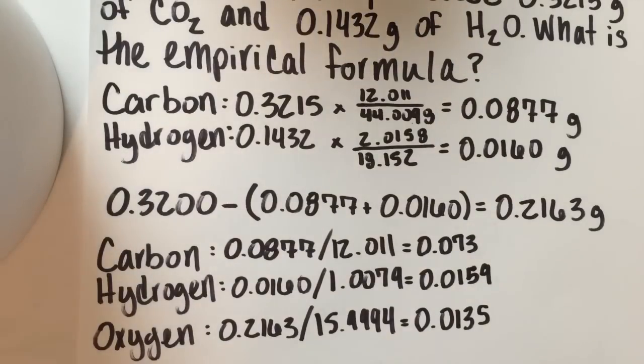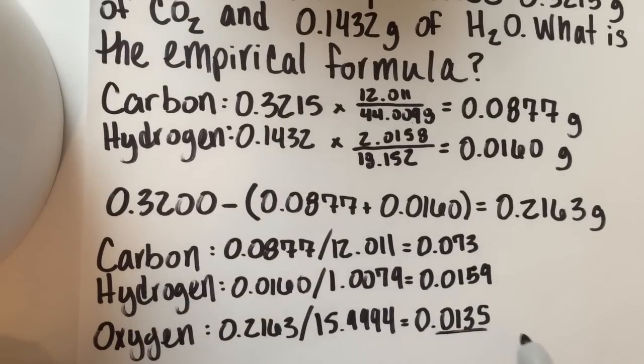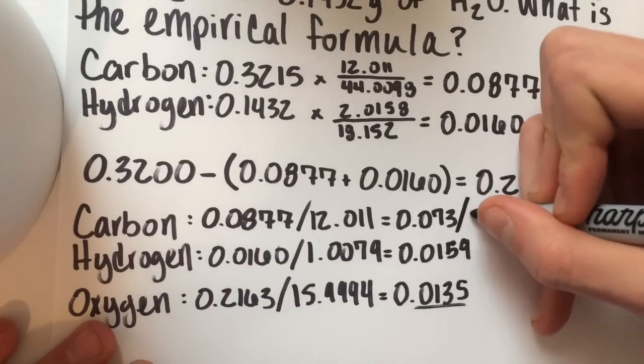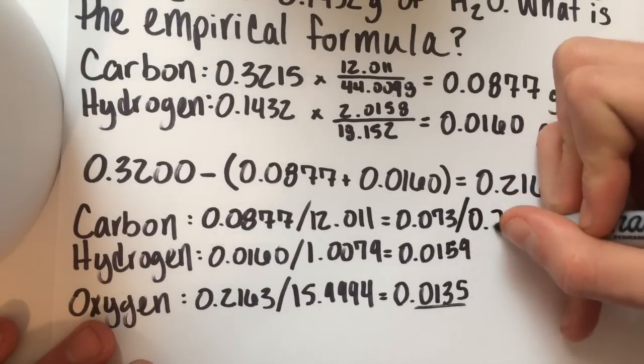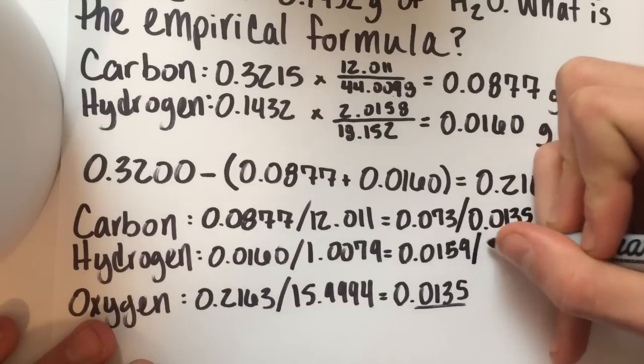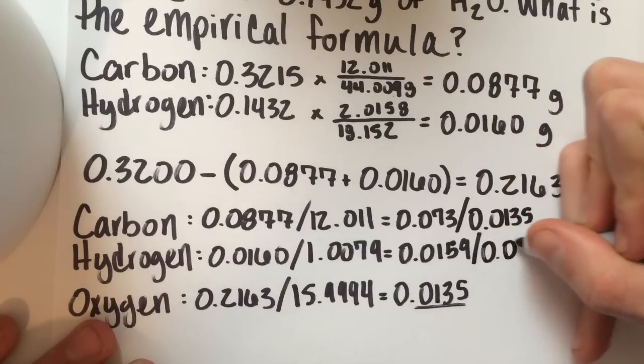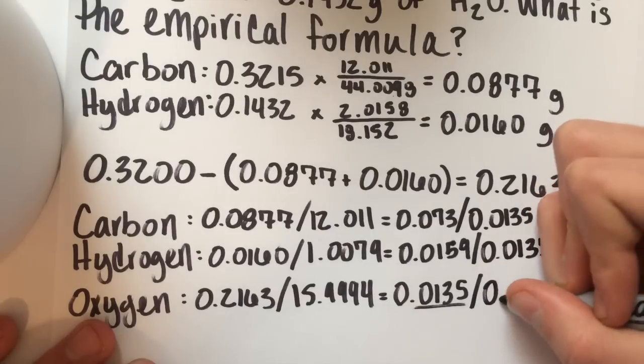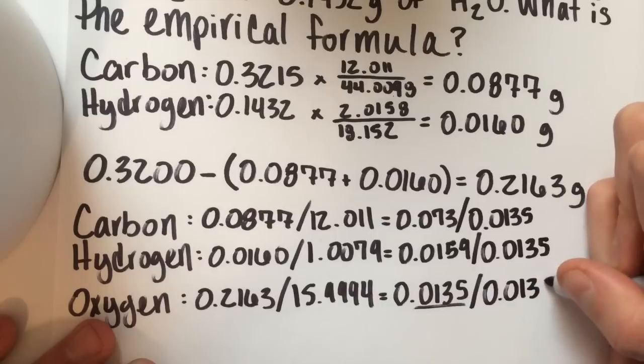Step four is to divide each molar amount by the lowest value. So you're trying to get whole numbers for the empirical formula. In this instance, since your smallest value is oxygen, we're going to divide everything by oxygen. So divided by 0.0135, divided by 0.0135, divided by 0.0135.